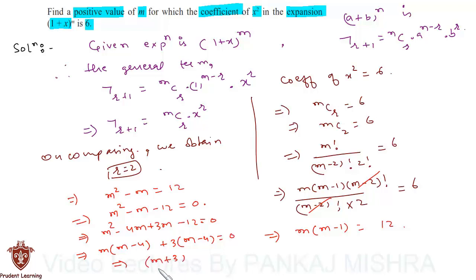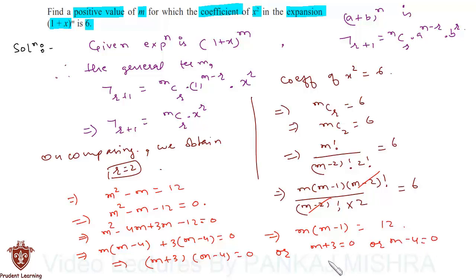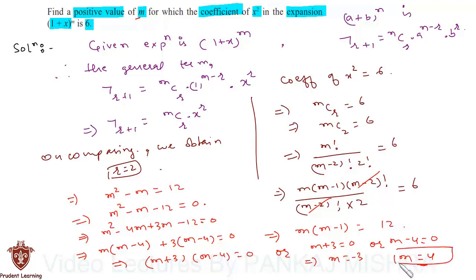This simply means (m+3)(m-4) = 0, so either m+3 = 0 or m-4 = 0. From this we get m = -3 or m = 4. Since we had to find the positive value of m, we can say that m = 4. So this completes our solution.